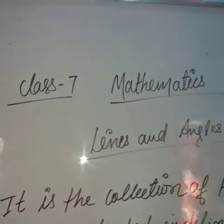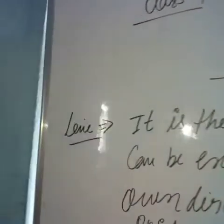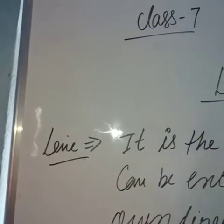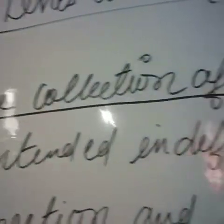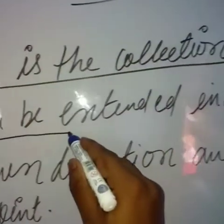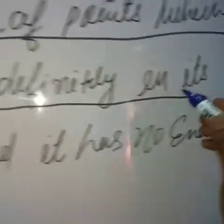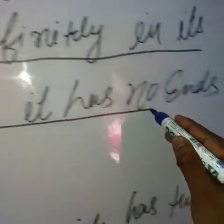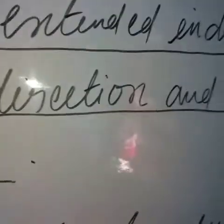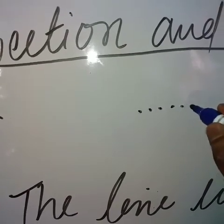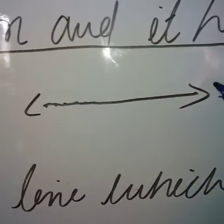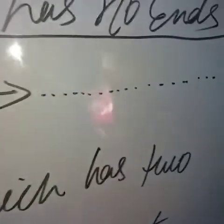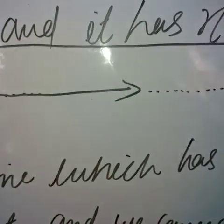The first topic of lines and angles is: what is a line? A line is a collection of points which can be extended indefinitely in its own direction, and it has no end points. When we join these points it makes a line and we can extend it in its own direction indefinitely. It is known as a line.